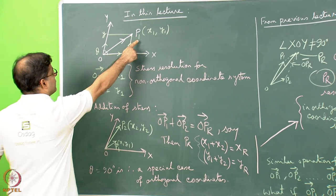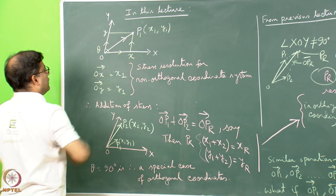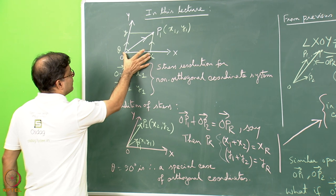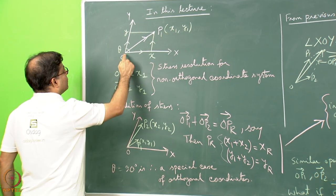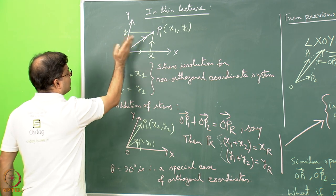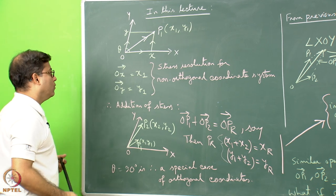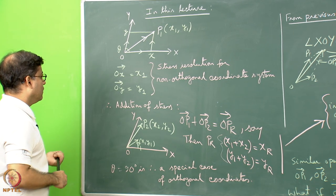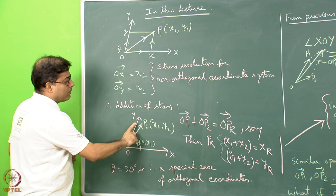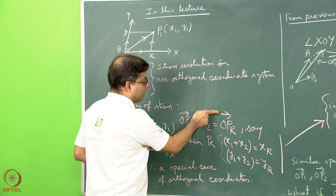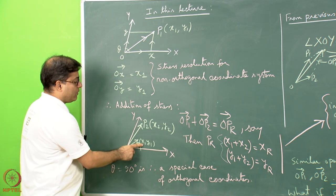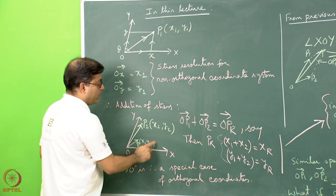Consider a point P1 where OP1 is a stress. The OX length equals X1 and the OY length equals Y1, meaning the stress can be resolved along the two non-orthogonal coordinate axes. For stress addition, OP1 plus OP2 equals OPR, and the coordinates of PR are X1 plus X2 and Y1 plus Y2.